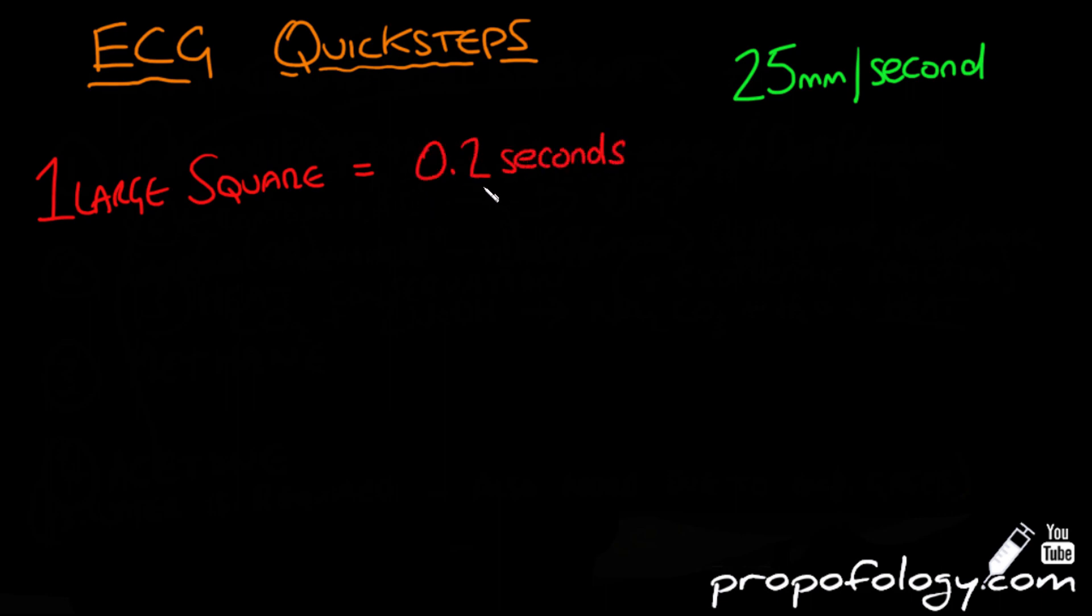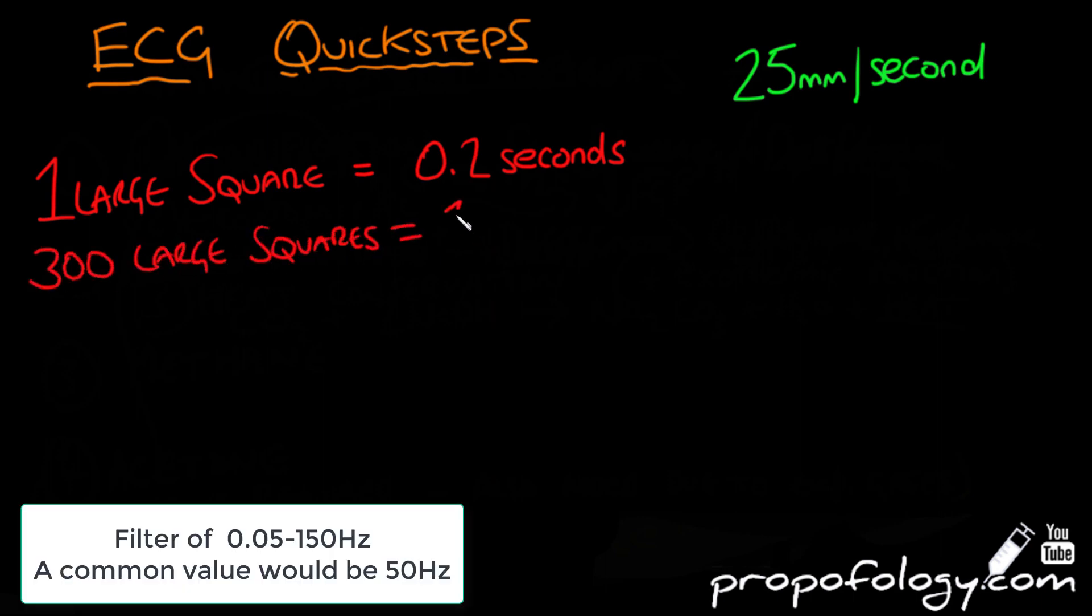You need to know that an ECG will run at 25 millimeters per second. You also need to know that one large square on the standardized ECG will be 0.2 seconds. 300 large squares is equal to one minute.